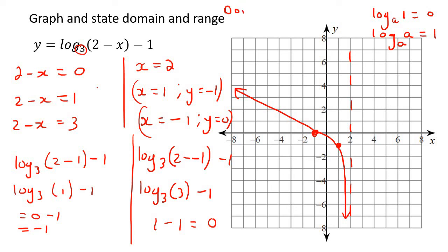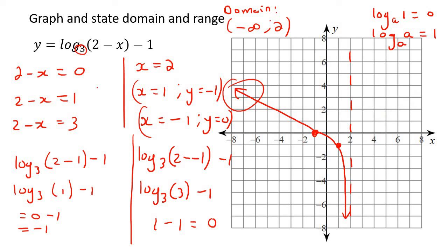For the domain — remember, domain is always left to right, which is the asymptote. In this example the graph goes the other way, but it's always the left one to the right one. The asymptote determines the boundary. For the range, that doesn't change — it's still negative infinity to positive infinity.